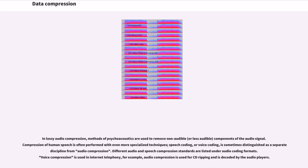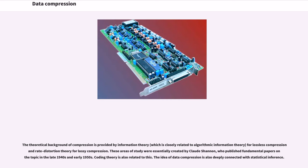Voice compression is used in internet telephony. For example, audio compression is used for CD ripping and is decoded by the audio players. The theoretical background of compression is provided by information theory, which is closely related to algorithmic information theory for lossless compression and rate distortion theory for lossy compression. These areas of study were essentially created by Claude Shannon, who published fundamental papers on this topic in the late 1940s and early 1950s.